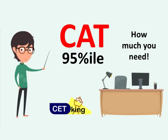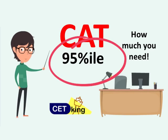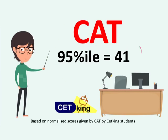If you need 95 percentile in the exam, your ideal attempt should be 41 marks — 41 marks is more than sufficient to get 95 percentile. Note that this is the net marks and does not include wrong attempts. So accounting for wrong attempts, you should get 45 net correct answers out of 100 to achieve 95 percentile. This is based on the normalized score.